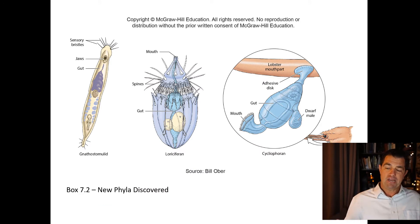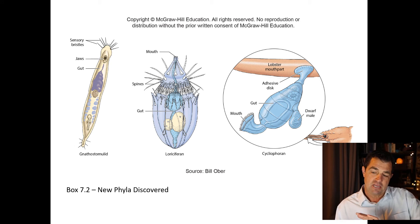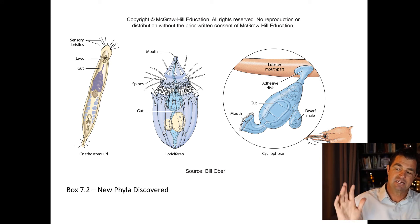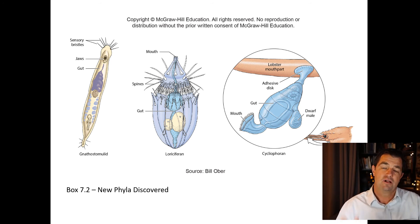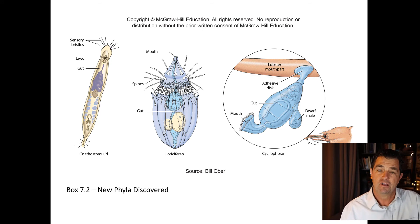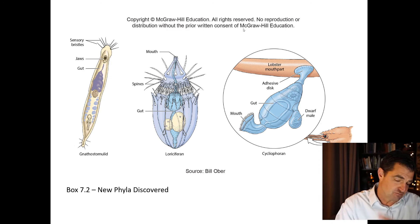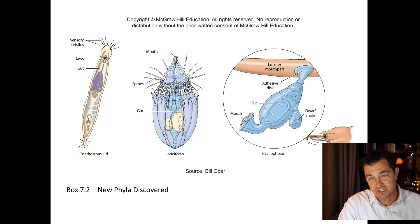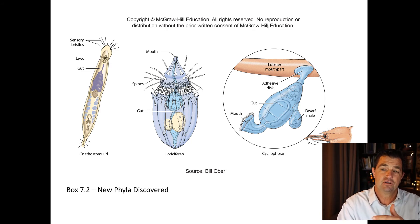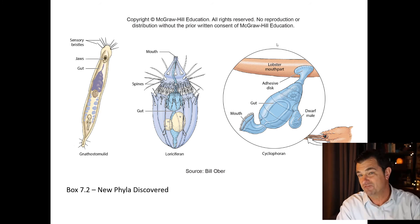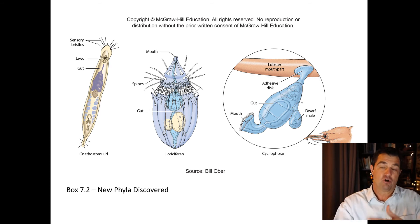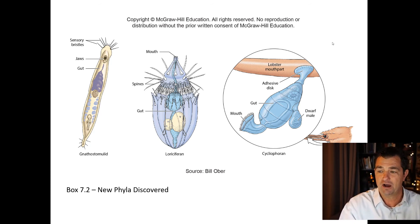I want to point out something interesting from the textbook, Box 7.2, about the discovery of three new phyla. We've only explored about five percent of the ocean, and what's fascinating is that people are discovering not just new species but whole new groups — new phyla — of animals in the ocean. That doesn't really happen on land, and I think that highlights how much there is still to discover in marine biology.